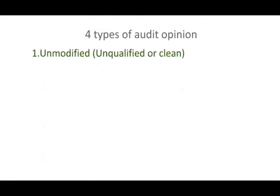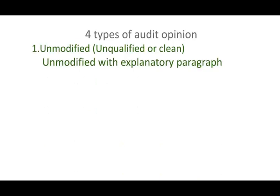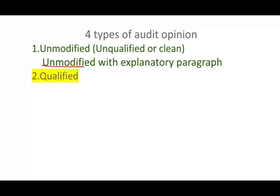The first thing we're going to look at is the four types of audit opinion: unmodified — or unqualified, depending whether you're using the AICPA or the PCAOB language — also called a clean opinion. With this opinion, we have a sub-opinion called unmodified with explanatory paragraph. Then we have a qualified opinion, an adverse opinion, and a disclaimer.